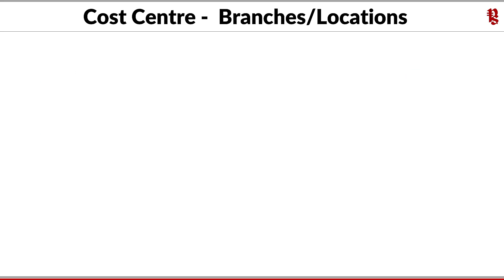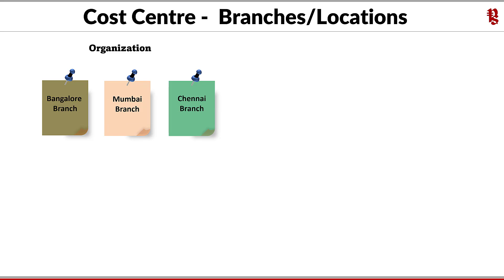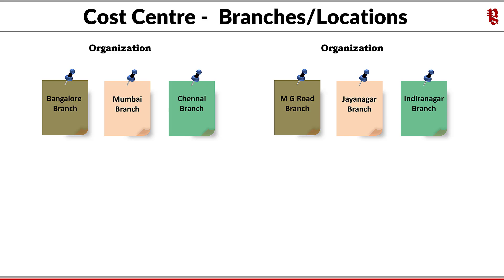The next use case scenario is an organization having multiple branches or locations where they want to track the performance of each branch. The indicative cost centers could be Bangalore branch, Mumbai branch, and Chennai branch, and so on. The same can further go to a micro level — for example, MG Road branch, Jayanagar branch, and Indiranagar branch, and so on.